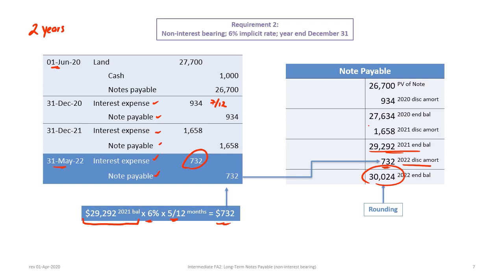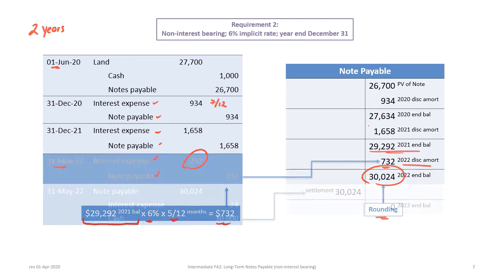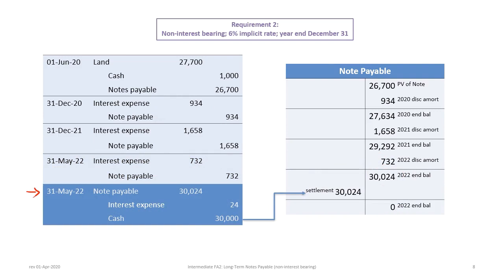The balance is not exactly $30,000 due to rounding. The final entry on May 31st settles the note: debit note payable for $30,024, credit cash for $30,000, and credit the $24 rounding error back to interest expense. Over the two-year period, the total interest is correct and the $24 is simply an immaterial rounding adjustment. The ending balance in the note payable account after settlement is zero — and we're done.